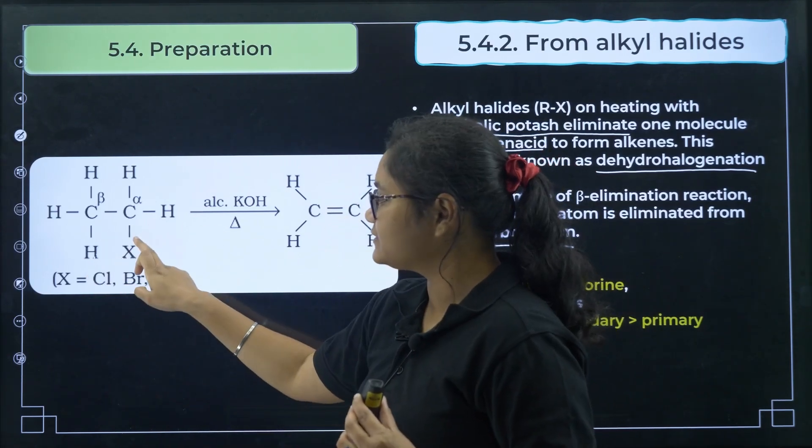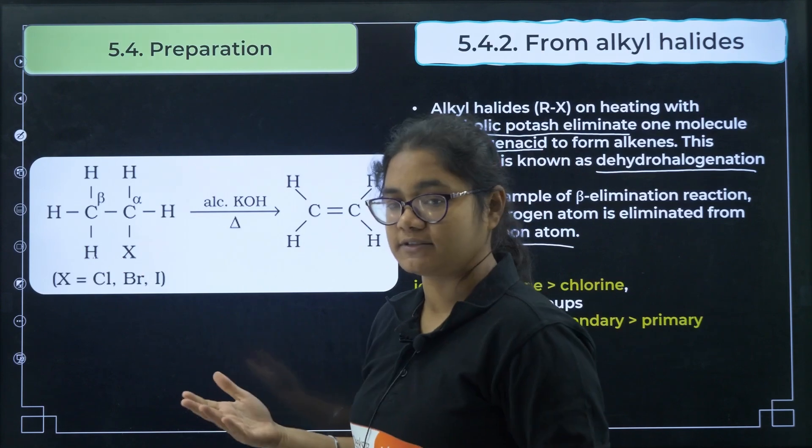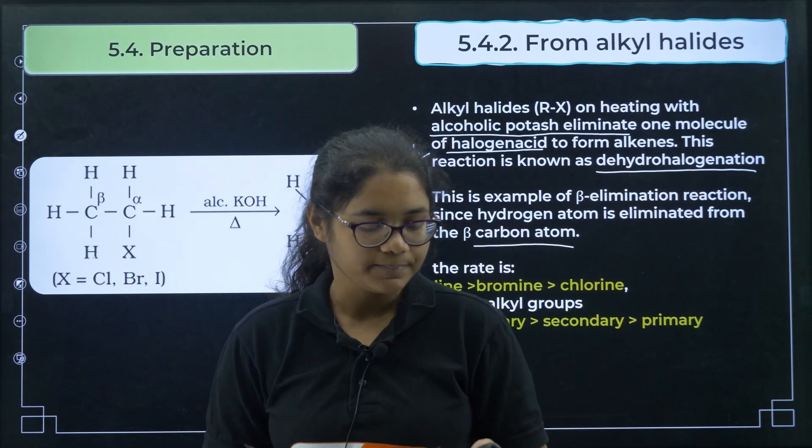In the dehydrohalogenation example: X is the halogen on one carbon and hydrogen is on the adjacent beta carbon. In the presence of alcoholic KOH, one hydrogen and one halogen are removed, forming a double bond. If X is iodine, the reaction is faster than with bromine, and faster than with chlorine.